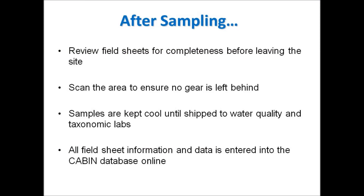When all sample components are done, the field sheets are reviewed to ensure all measurements have been recorded. The area is scanned thoroughly to ensure that no equipment or debris are left at the site. Bugs and chemical water quality samples are kept cool until they can be shipped to the respective labs for analysis. All information recorded on the field sheets, as well as photos and lab results, are entered into the CABIN database online.